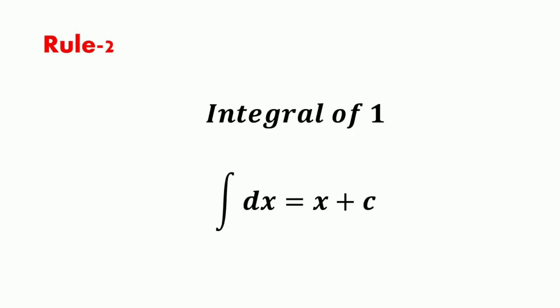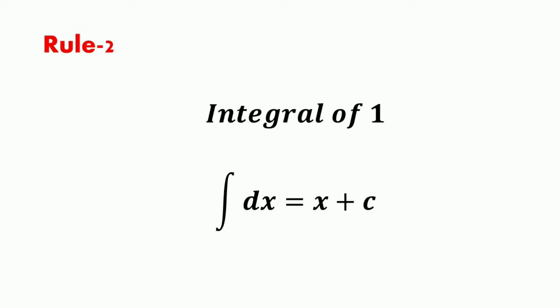The second rule of integration is the integral of 1. The differentiation of x with respect to x is 1, and since integration is the reverse process of differentiation, the integration of 1 is x plus c, where c is the arbitrary constant. The integral of 1 is written simply as dx, so the integral of dx is equal to x plus c.